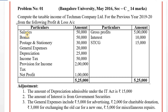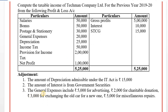First, salaries — salaries are allowed because employees receive salaries for business purposes. Bonus paid to employees is also allowed. Postage and stationery is a business expenditure, allowed. General expenses — go to adjustment number 3. General expenses include 5,000 for advertising.